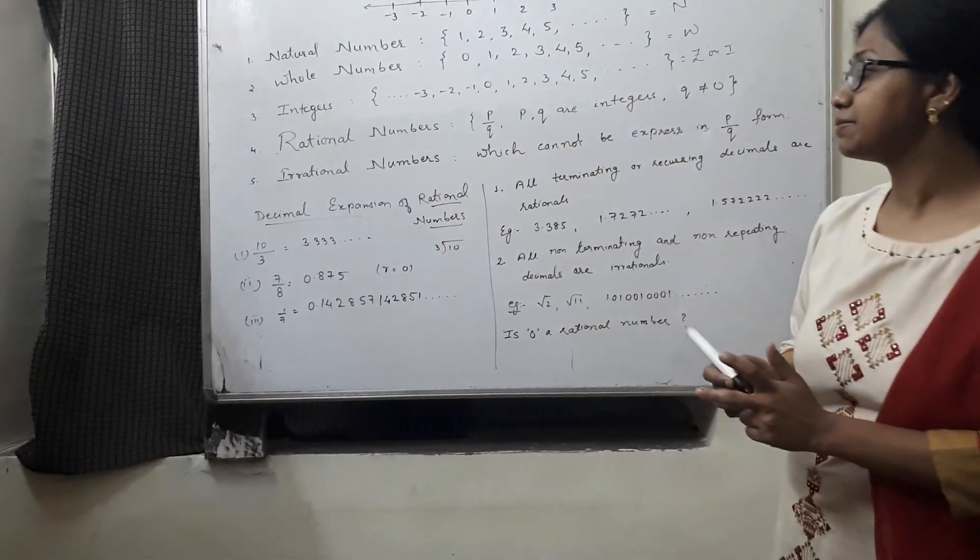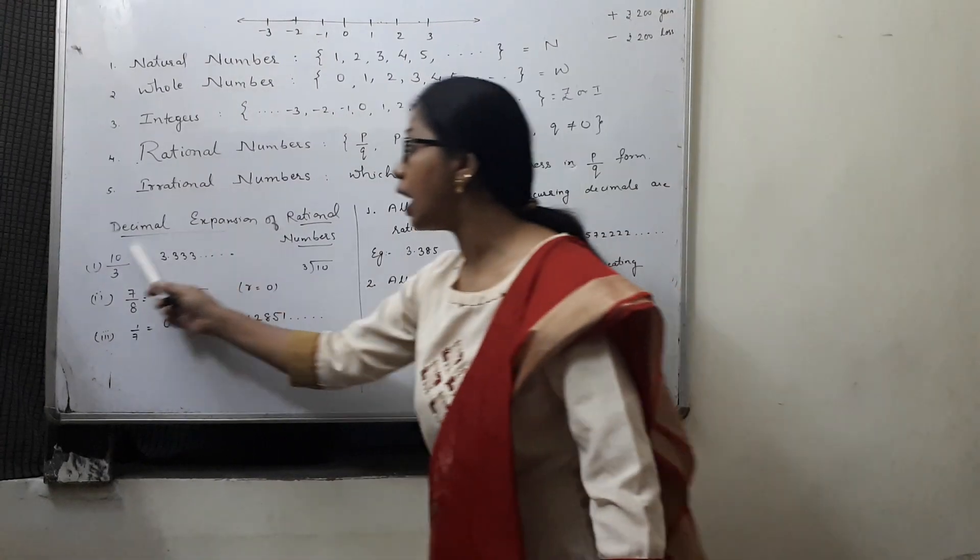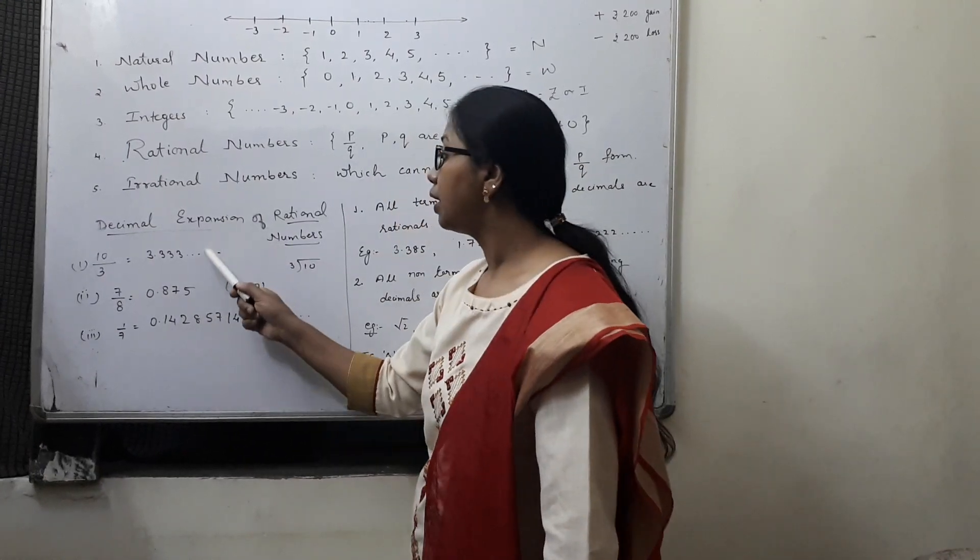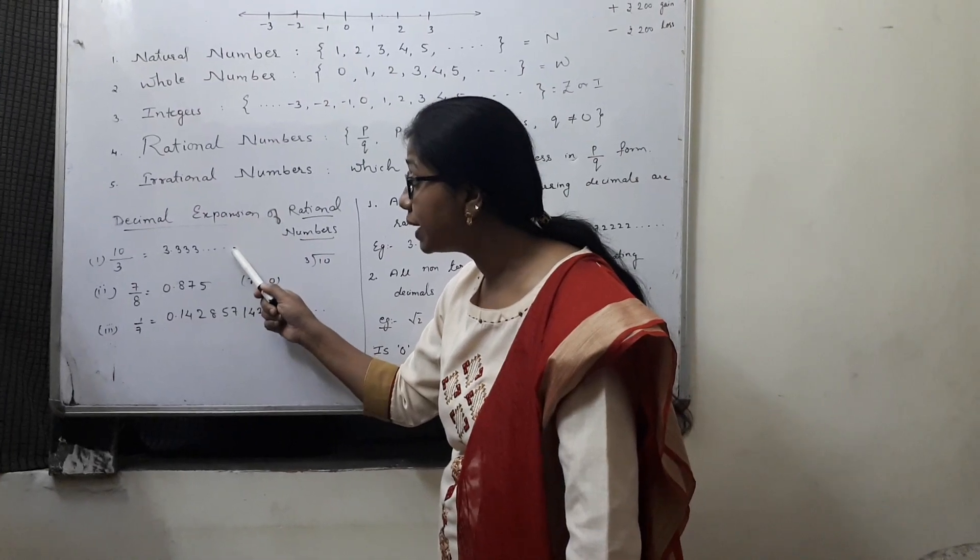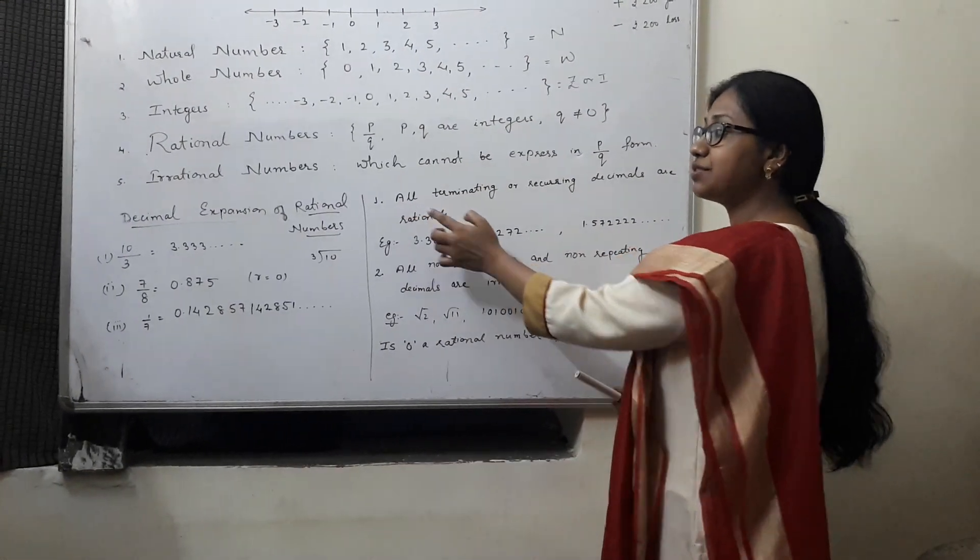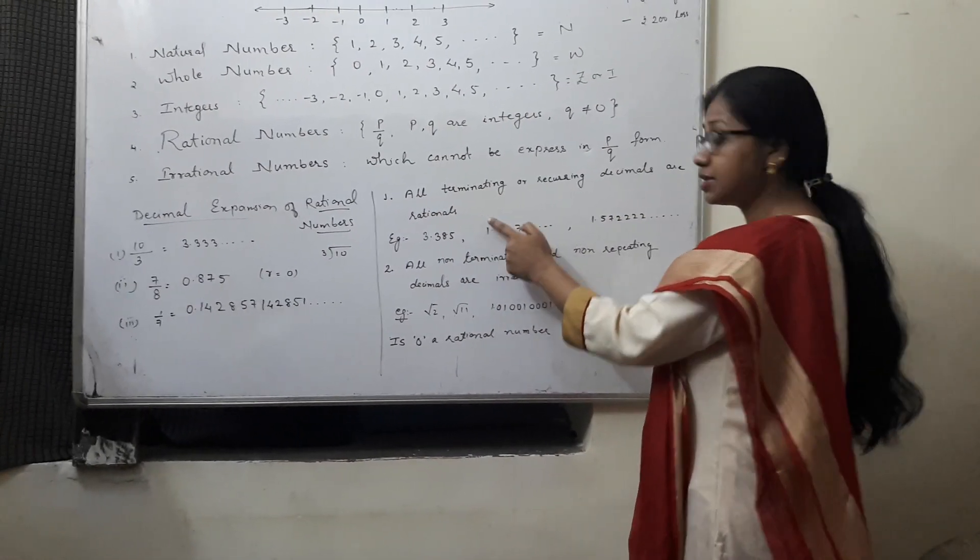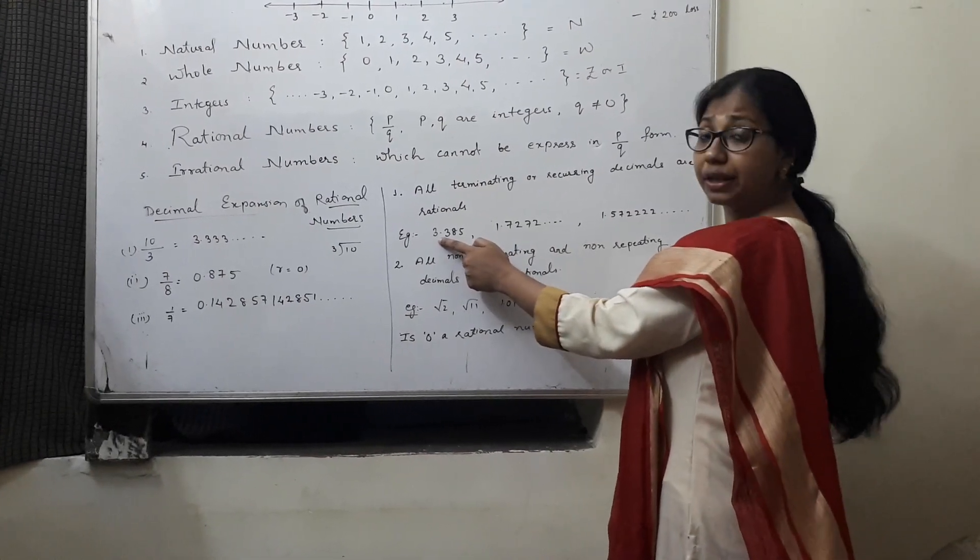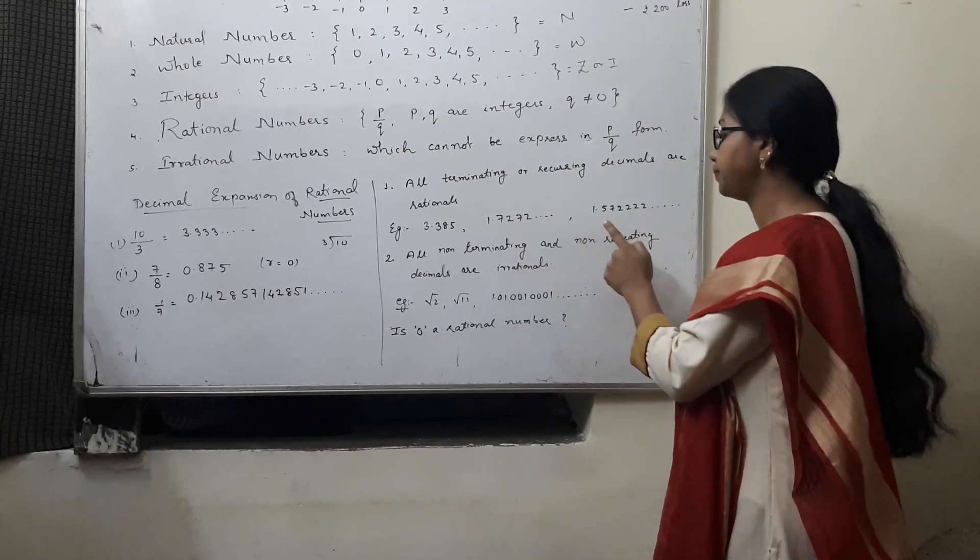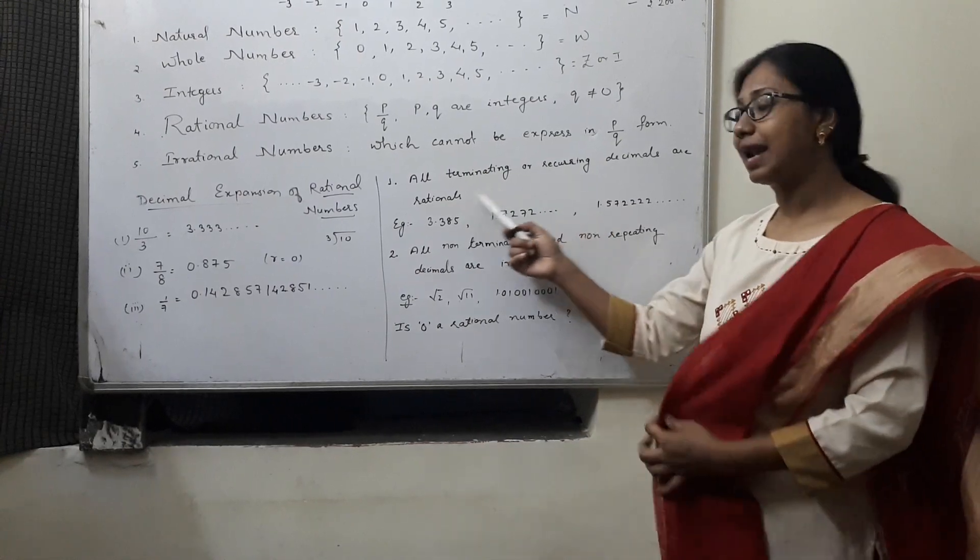So, by its decimal expansion, there is one more definition for rational and irrational. Because all these are rational numbers. Why? Because either it is terminating or it is non-terminating but when it is non-terminating, the digits are repeating. In terms of decimal expansion, we can define the rational numbers are all terminating or recurring decimals are rationals. For example, it can be terminating, 3.385, 1.7272, digits may be repeat, 1.572222 and continuously repeating. These are the examples of rational numbers.